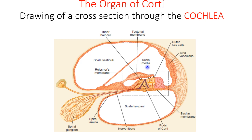Inside the scala media, there is a special organ — a neural apparatus responsible for transduction of sound — called the organ of Corti. This organ of Corti is situated on the basilar membrane. The scala media is covered by two membranes: the basilar membrane below and the Reissner's membrane on top.